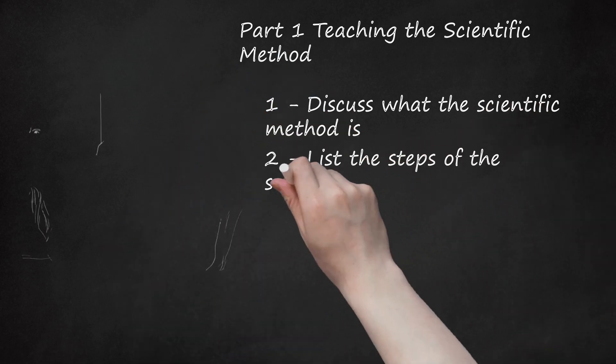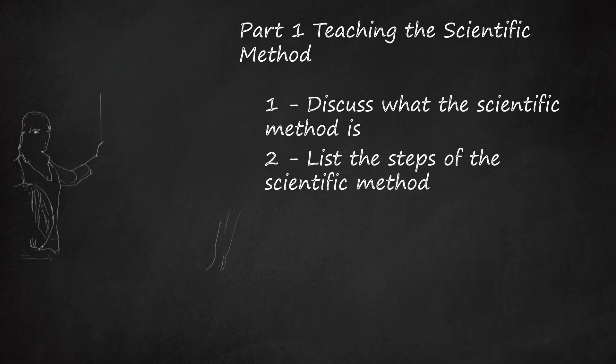2. List the Steps of the Scientific Method. The first part of explaining it to kids is to list all of these steps so they can see them all at once. Depending on the age group you are teaching to, you can make these steps more or less specific.